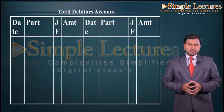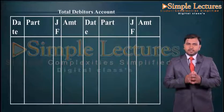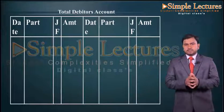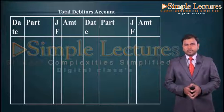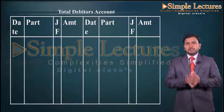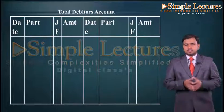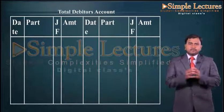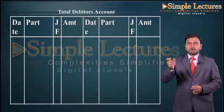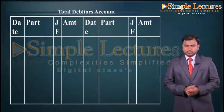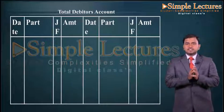Coming to the total debtors account, the format will be again of the ledger account where date, particulars, journal folio, and amount are recorded on both sides. We are going to prepare this to ascertain sales, as sales is not given in the question. So out of the total debtors account we are going to find out the sales.